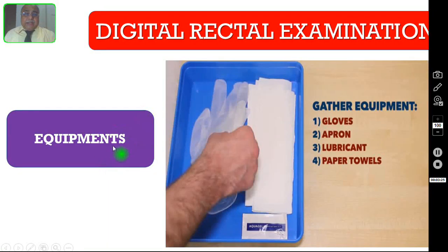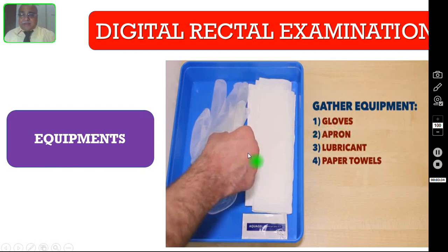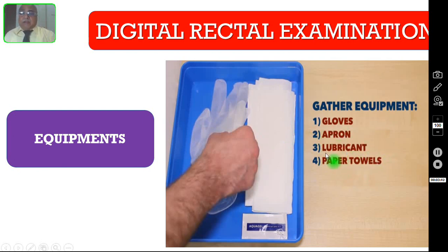So what are the equipments needed? It is very simple. You need only a glove — just an examination glove; you need not use a sterile glove here. Of course, you need personal protection devices, and you need the lubricant — that is the jelly — and paper towels.